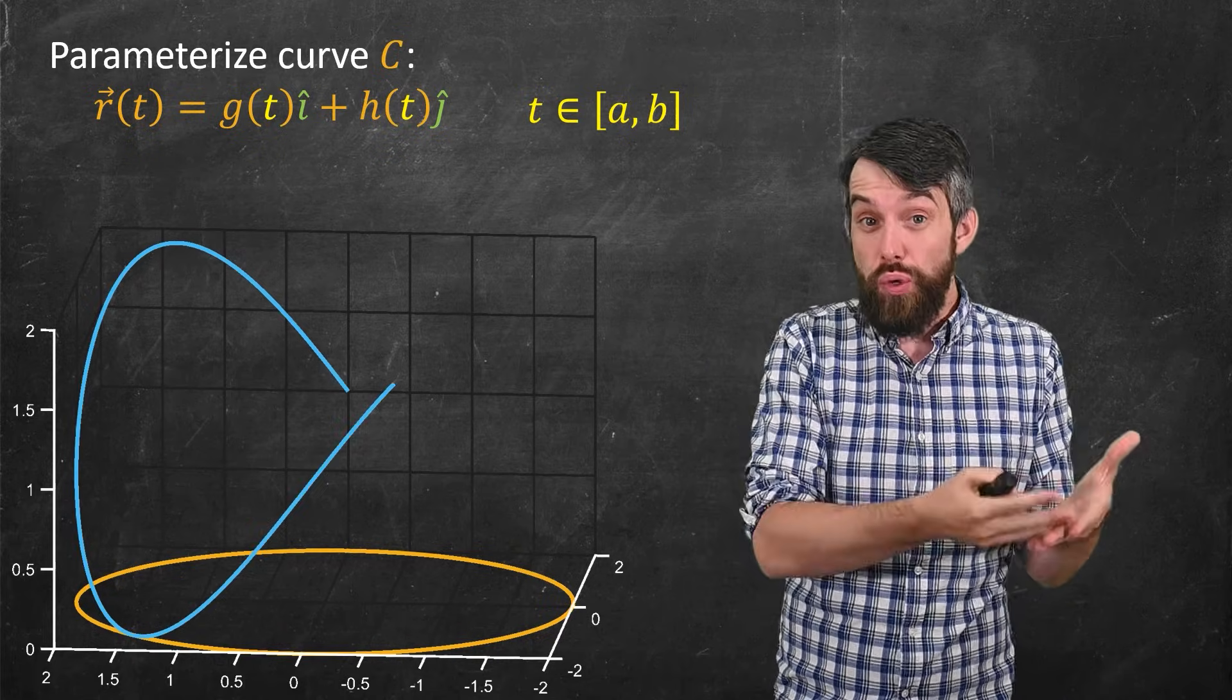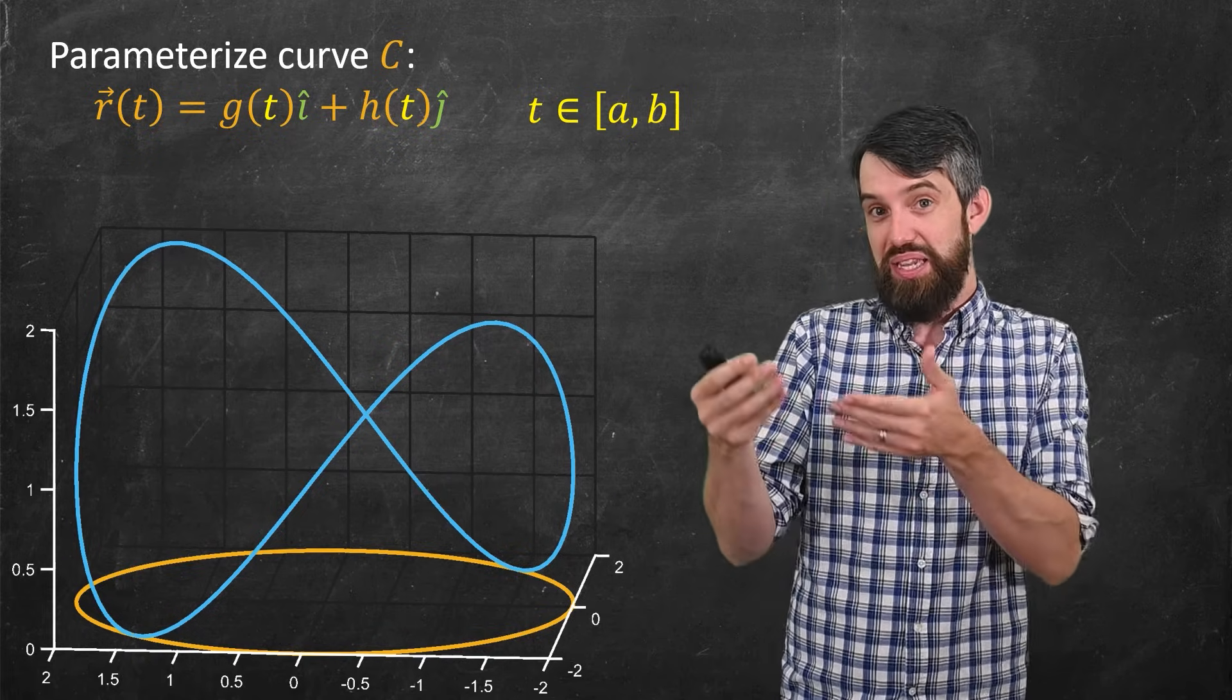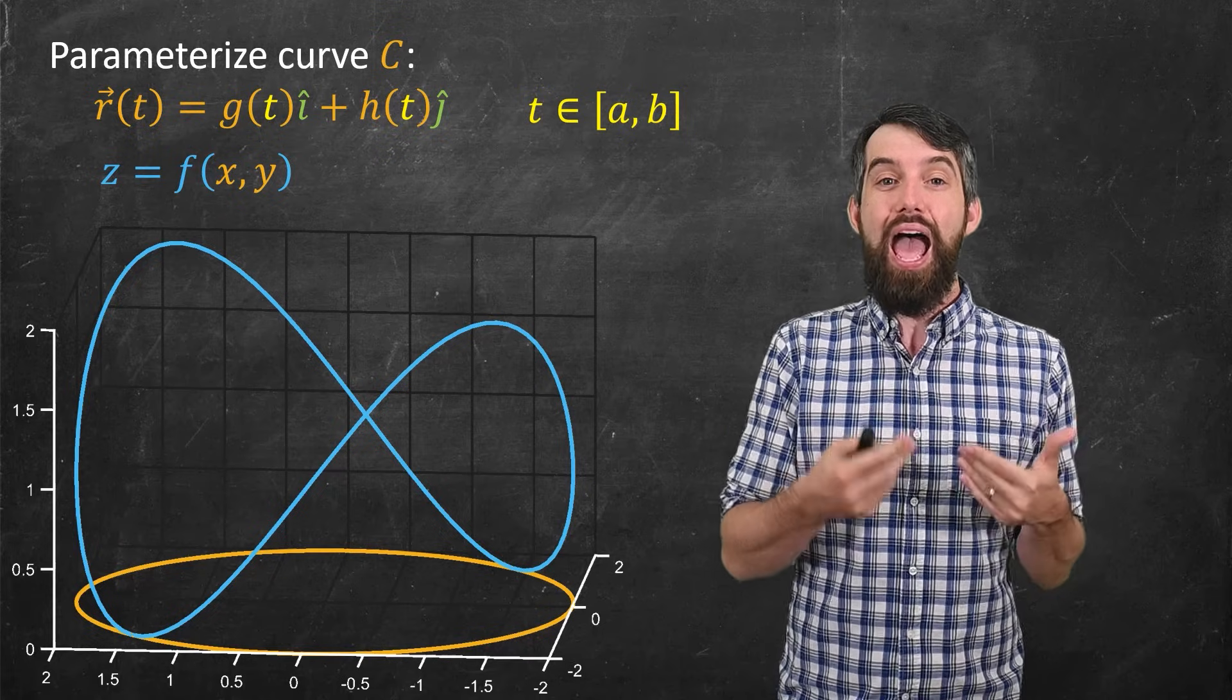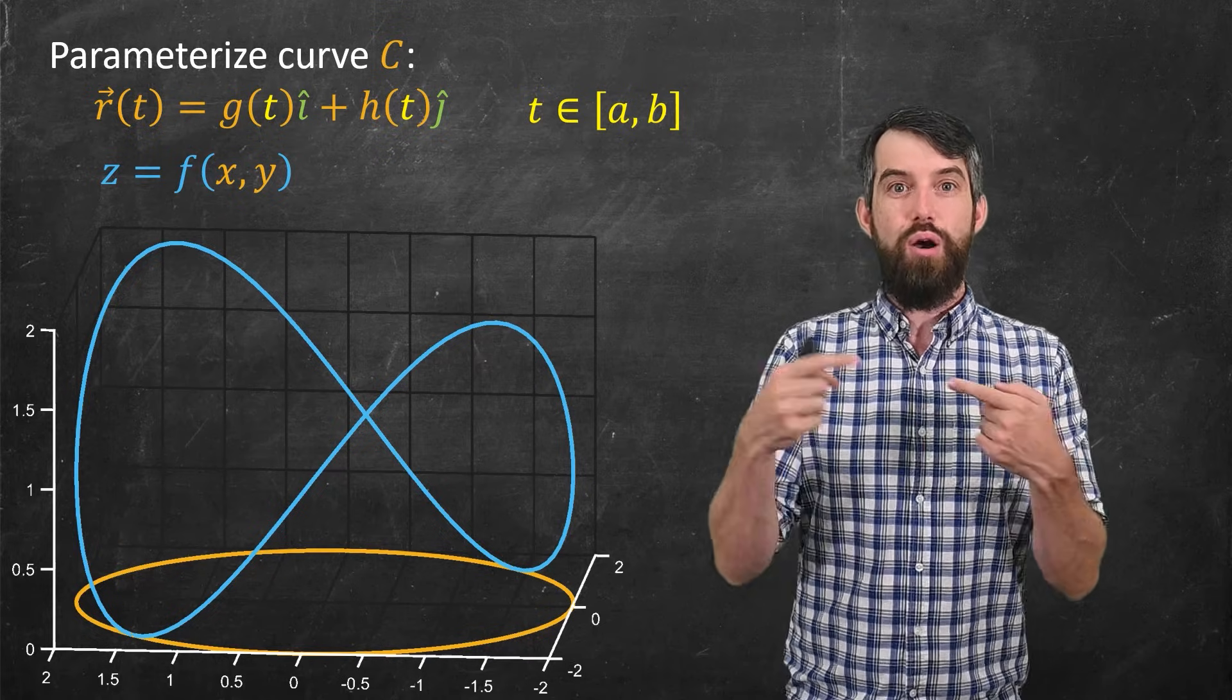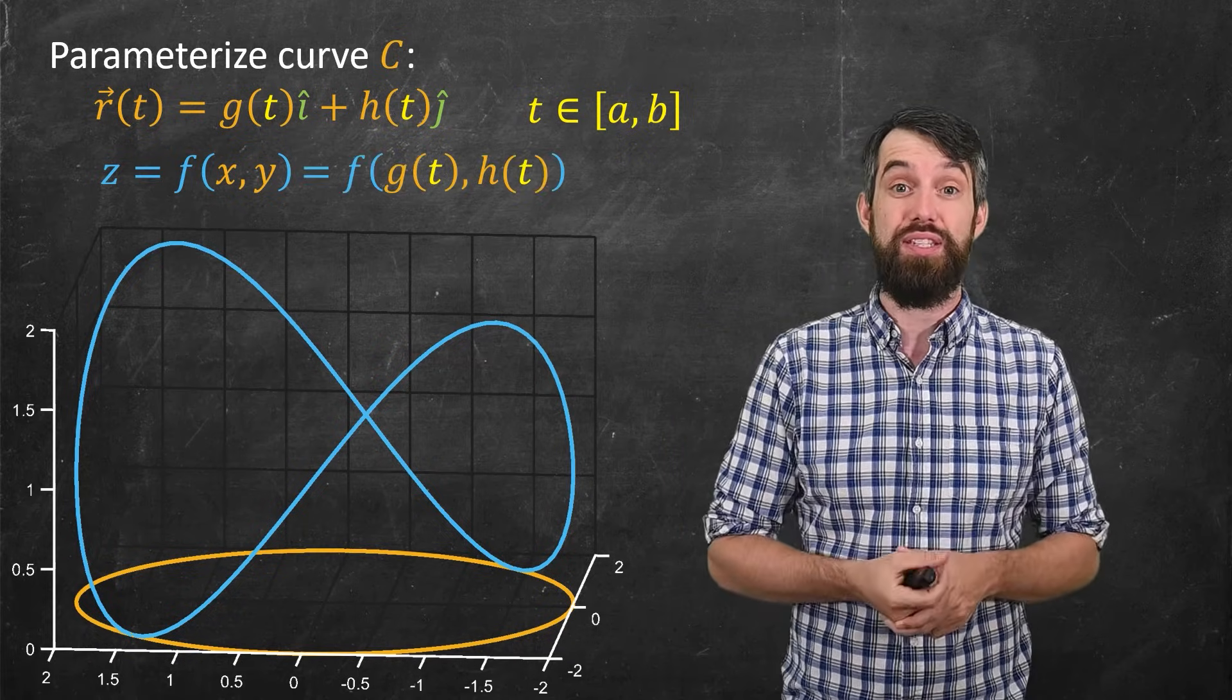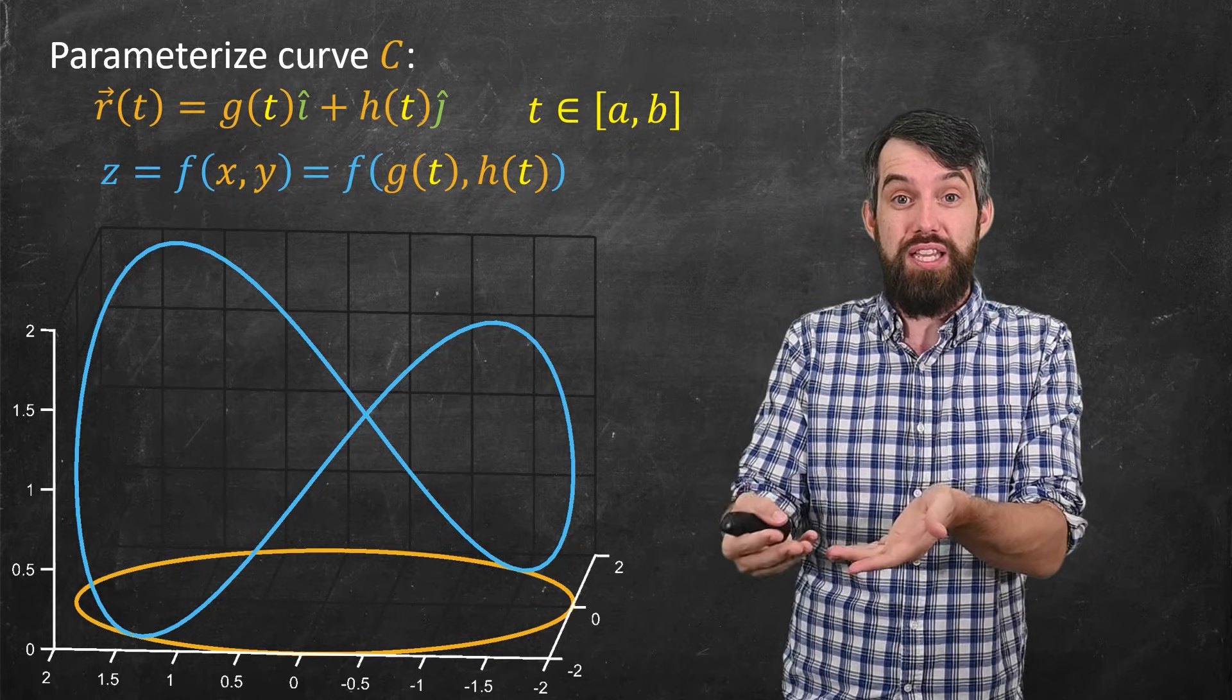So now let me plot a new curve. This curve has the same x and y components, but instead of having a z component being zero, it now has a z component being some arbitrary height, and I can call this height f(x,y). Now if I focus specifically on the x and y that are along this curve, I could substitute in that this is f of g(t) and of h(t). That is, my third component is now just some other function of t.